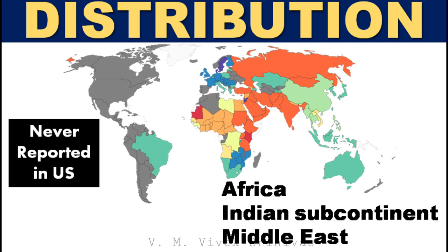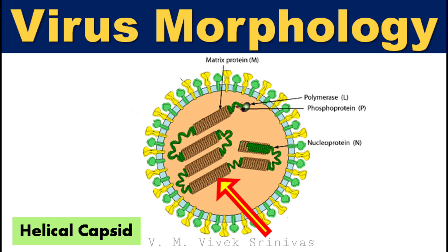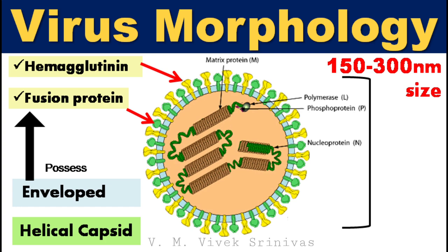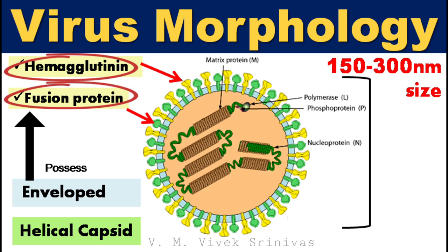Virus morphology: This virus possesses a helical capsid and is covered with a lipid envelope all around. The entire virus is about 150 to 300 nanometers in diameter. This lipid envelope is studded with two important proteins: hemagglutinin and fusion protein. These two are the immunodominant proteins, playing a major role in antigenicity — that is, they are virus-neutralizing antigens.